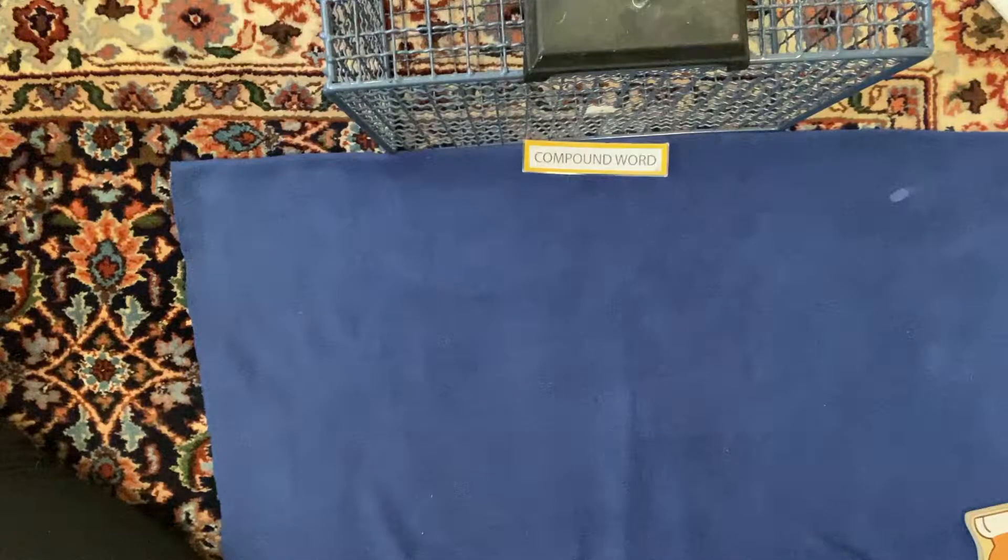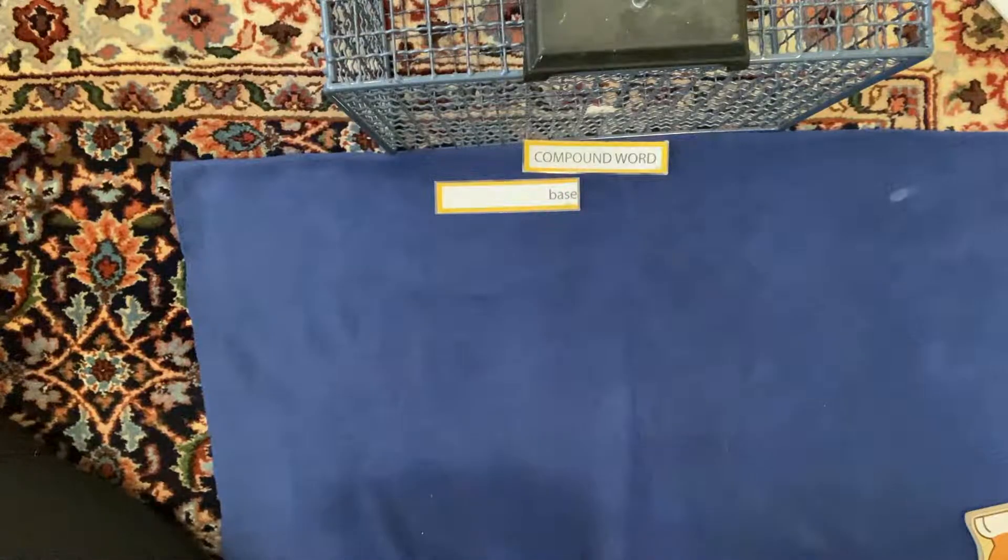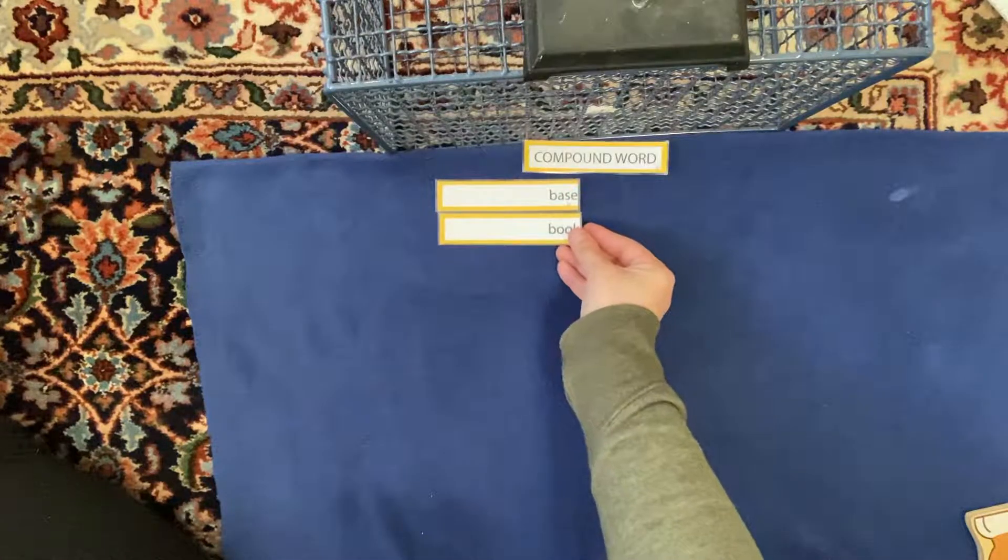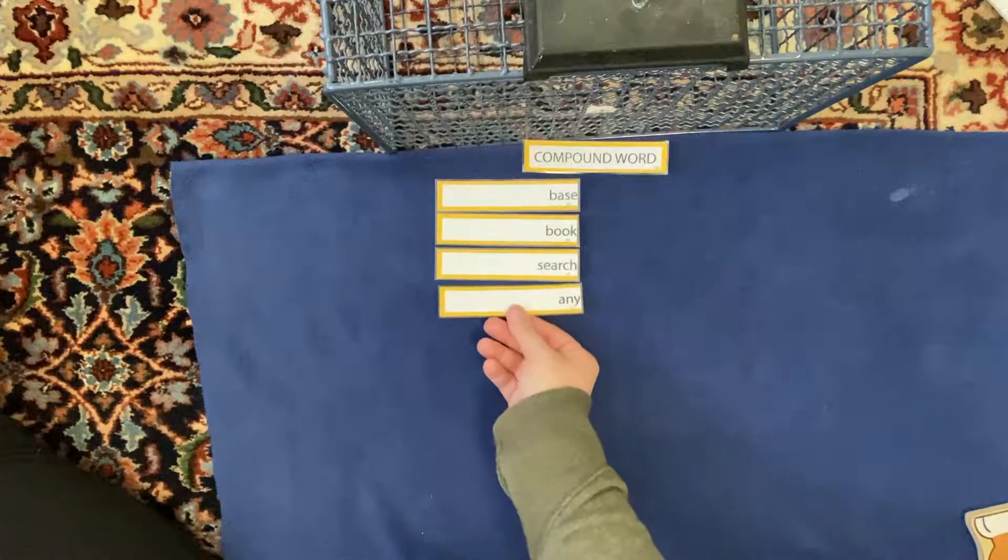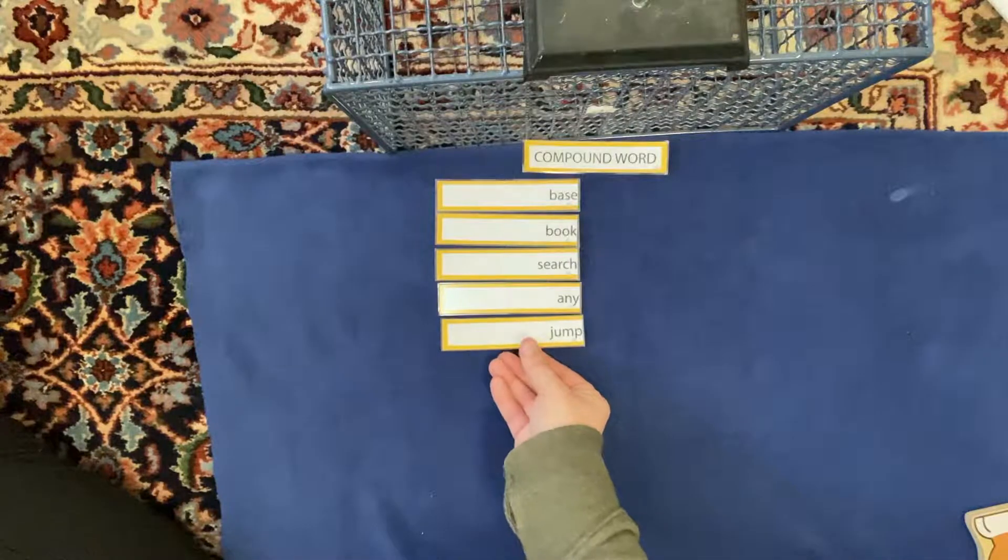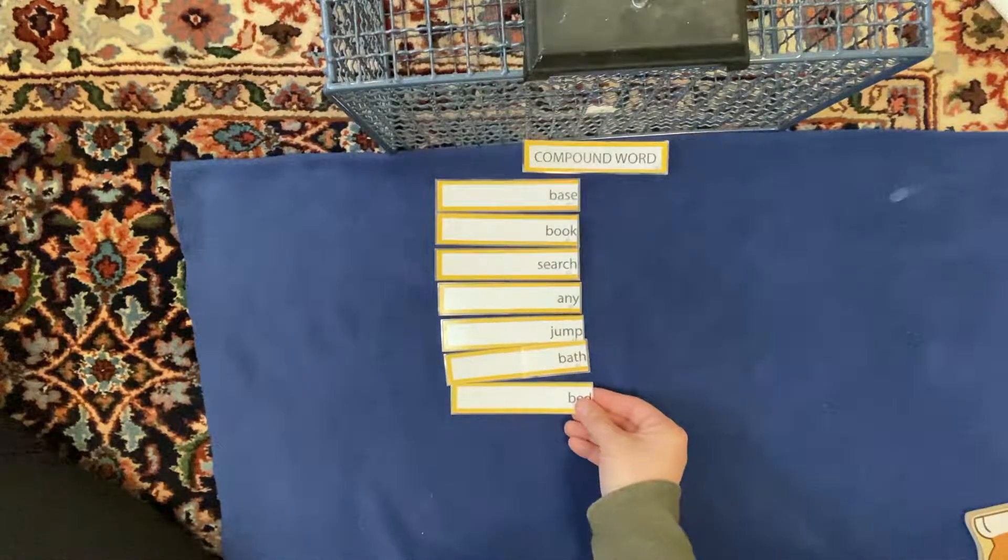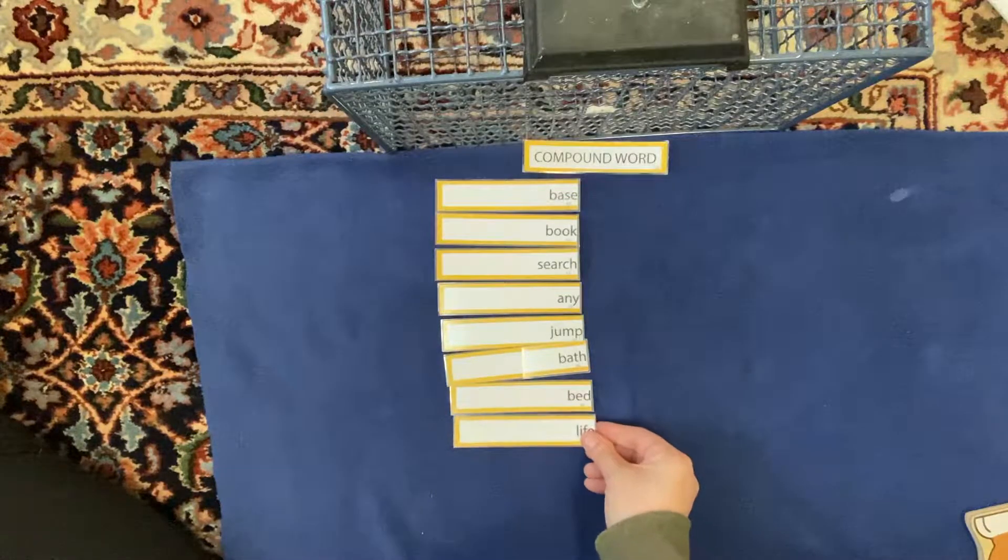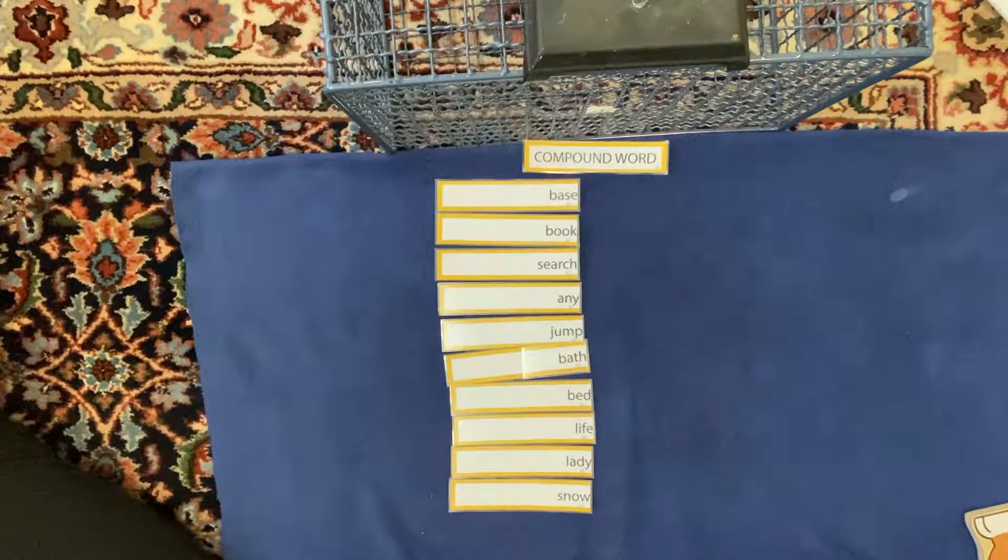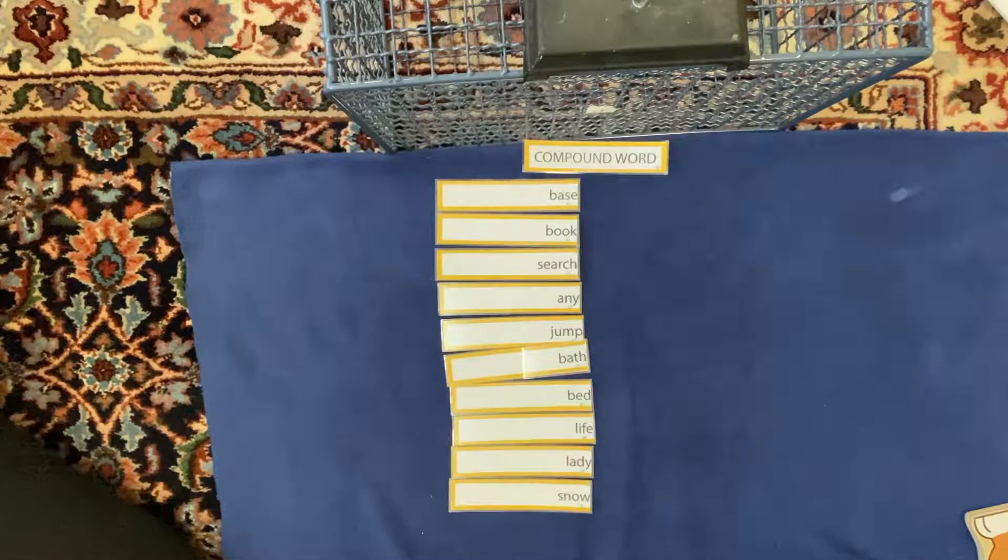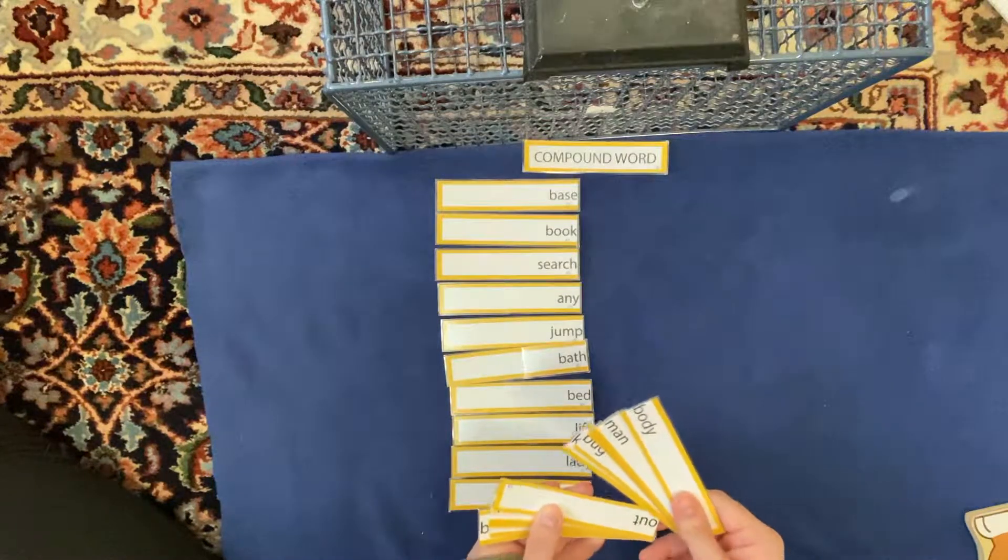Well, let's take a look at some other words. Okay, I have the word base, book, search, any, jump, bath, bed, life, lady, snow. Okay, then I have a couple other words. They are on cards that look like this.